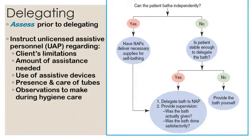Regarding delegation, always assess prior to delegating. The UAP — unlicensed assistive personnel — includes your techs in the hospital or CNAs in long-term care. When considering delegation, evaluate the client's limitations, the amount of assistance needed, use of assistive devices, presence and care of tubes, and observations to make during hygiene care.